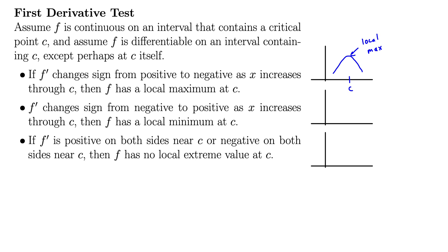For part two: if f prime changes sign from negative to positive as x increases through c, then f has a local minimum at c. Let's draw it out and make sure that's intuitive as well. So here we have our c again, and it says f prime goes from negative to positive — and of course, there's our local min.